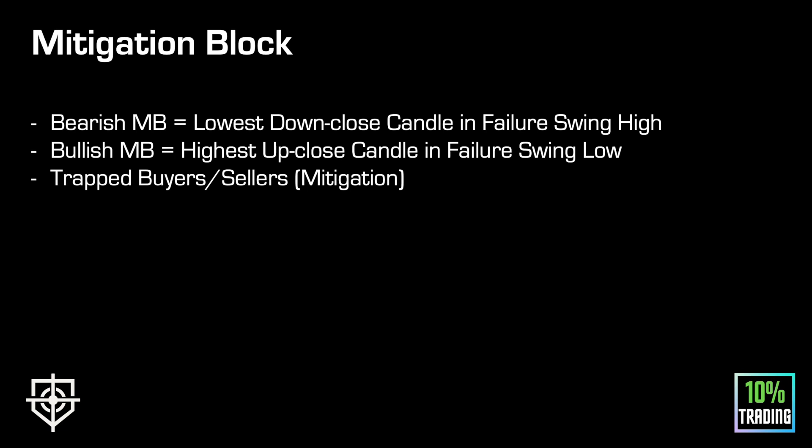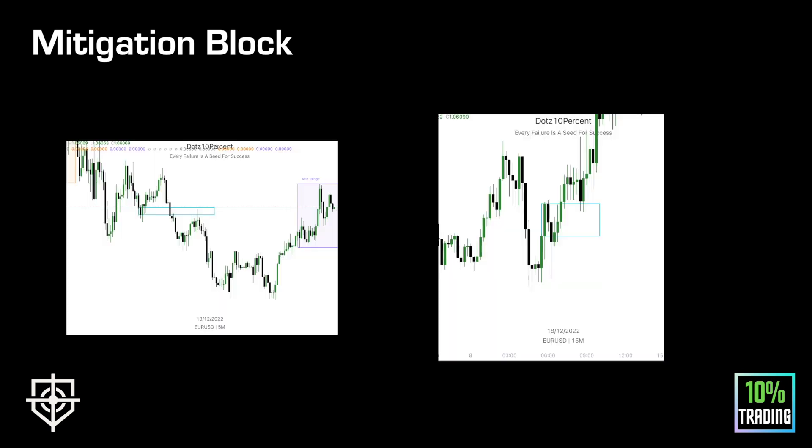Mitigation blocks are found at breaks of structure — they're a continuation model if you're going to use them for entry. The algorithm forms the mitigation blocks and when price returns to them it allows trapped buyers and sellers to mitigate their positions. For example, a bearish mitigation block allows trapped buyers — people who were buying assuming price was going to go higher — to mitigate, meaning to remove or get rid of, their positions. That is where true mitigation occurs.